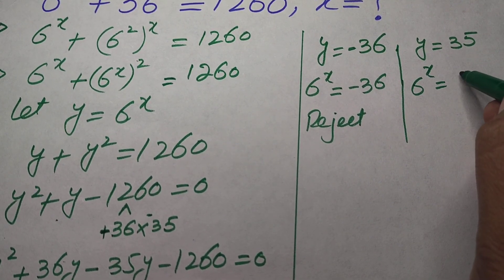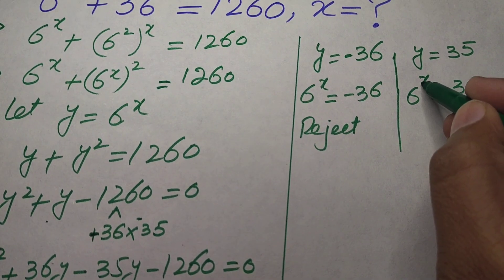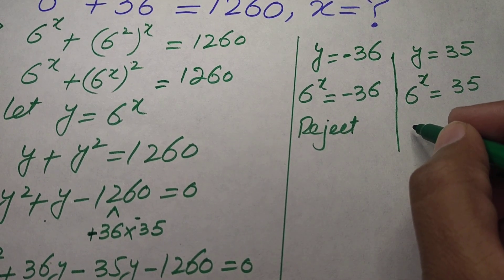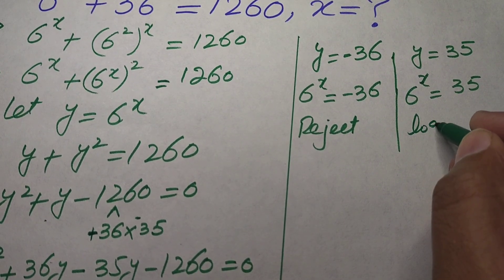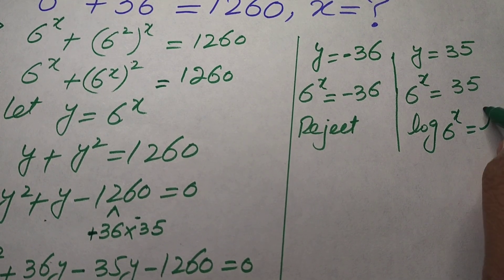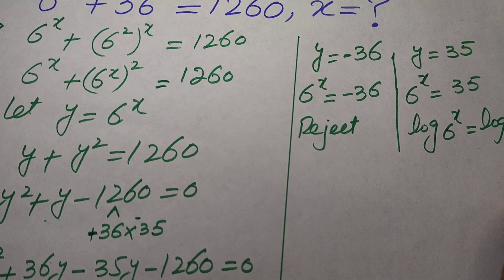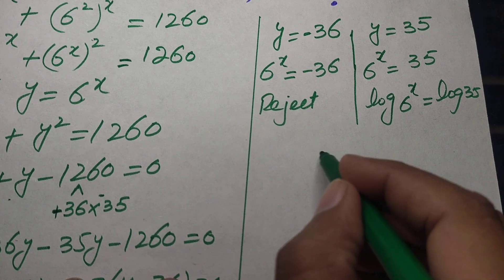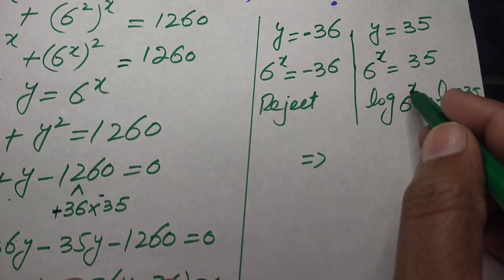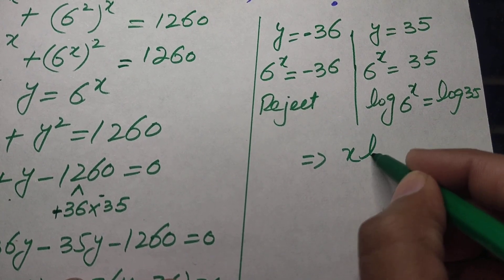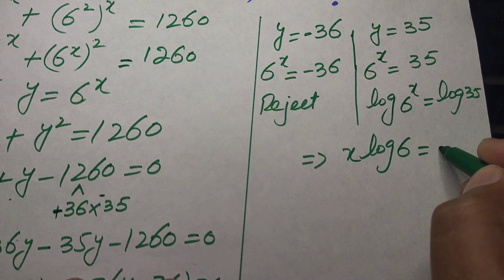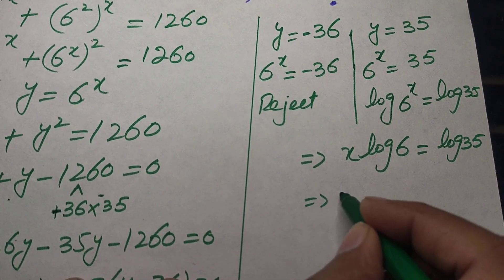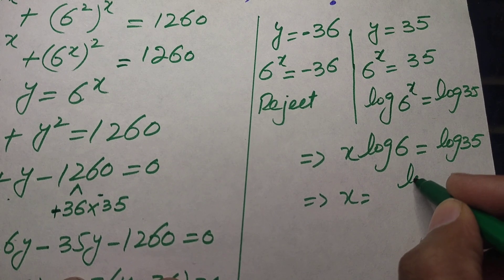Substituting y equal to 35 gives 6 to the power of x equal to 35. To find x, we take the log of both sides: log of 6 to the power of x equals log of 35. Applying the logarithm power property, we bring the exponent to the front: x times log 6 equals log 35.